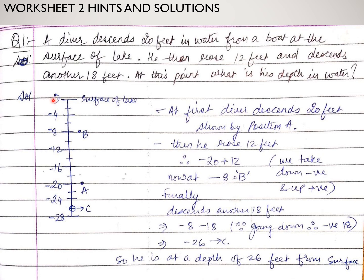You can see this scale: this is 0, this is 2 small division, this is 4, 8, 12, 16, 20, 24, and 28. The mid division is half, that is 2, 6, and so on. It is given that first the diver descends 20 feet. So in the starting, the diver was here at the surface. He dives into the water and goes 20 feet down and reaches point A. You can see his depth right now is minus 20.